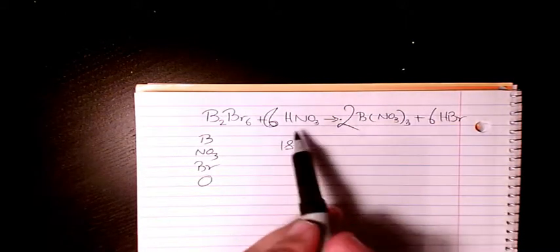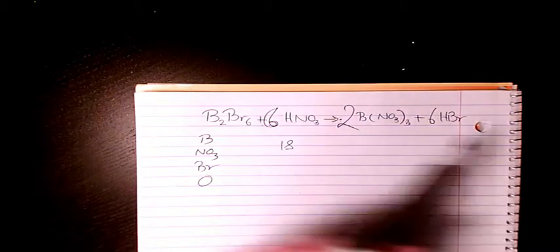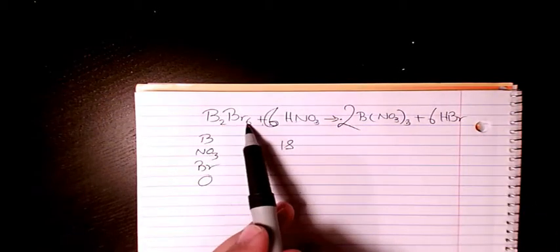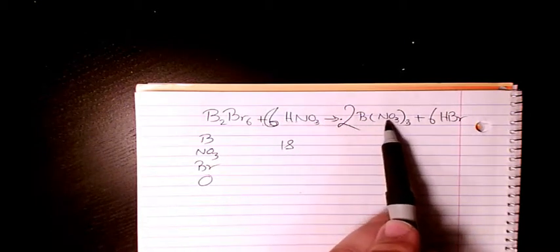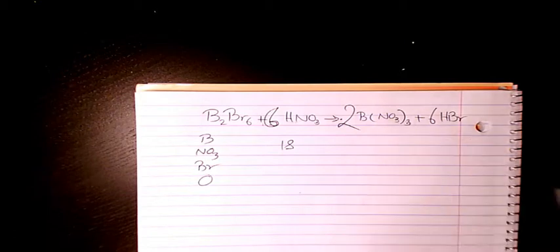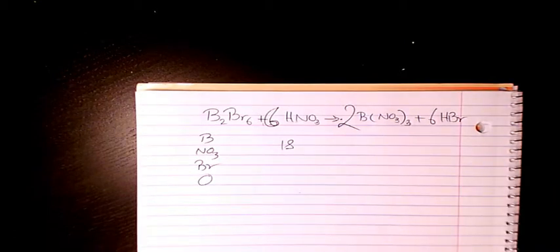What about hydrogen? Hydrogen, we have six and we have six, so that's balanced. So one mole of B2Br6 plus six moles of nitric acid gives two moles of B(NO3)3 plus six moles of HBr. So that's the balanced form of this reaction.